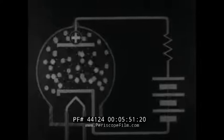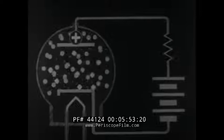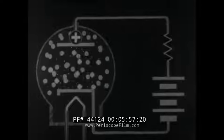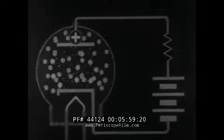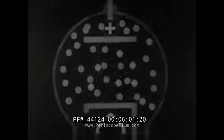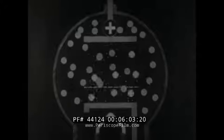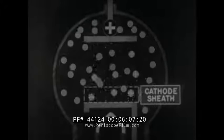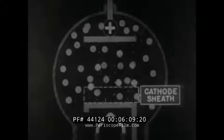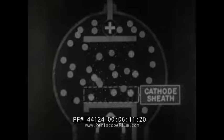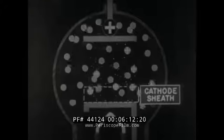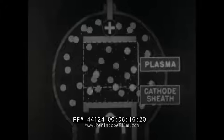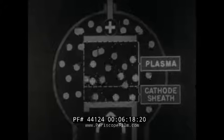When the proper anode potential is applied, the gas is ionized and the current across the tube is greatly increased. Because of these actions, two regions develop within the tube. One region, called the cathode sheath, is located close to the cathode. The other region, called the plasma, extends from the cathode sheath to the anode.